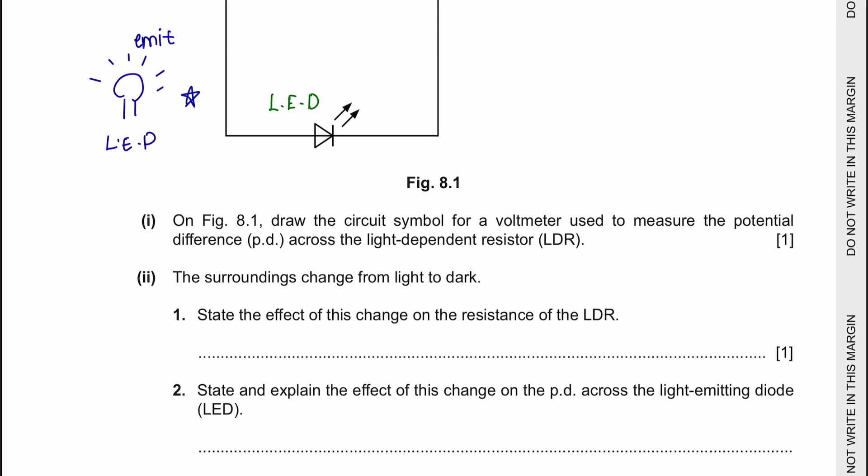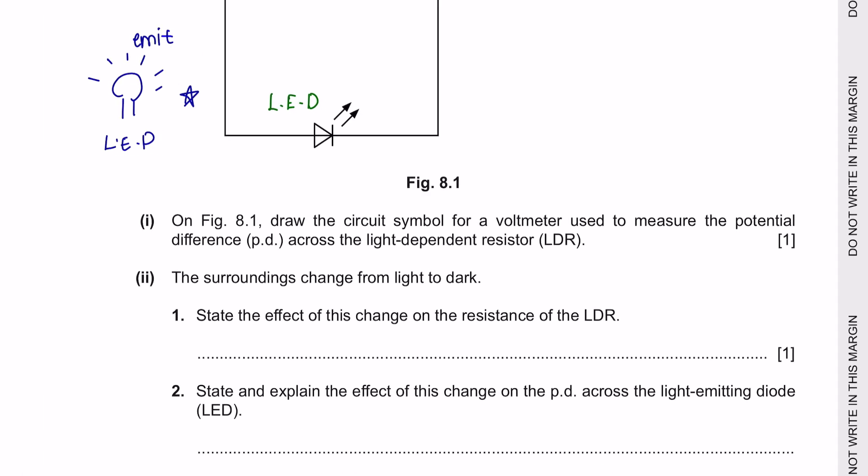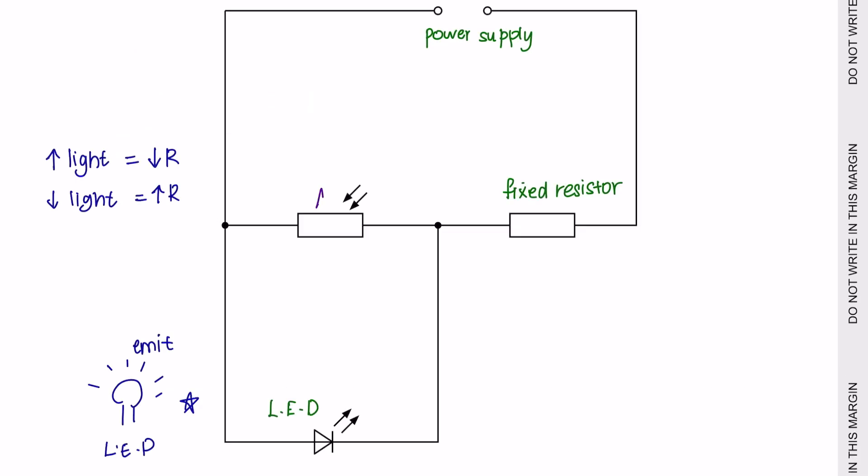Question part 1. On figure 8.1, draw the circuit symbol for a voltmeter used to measure the potential difference across the light dependent resistor. This here is your light dependent resistor. A voltmeter has to be placed opposite of your component. So, you can place it like this or even opposite on the other side like this. It doesn't matter as long as it is on the opposite side and not along the lines of the circuit.